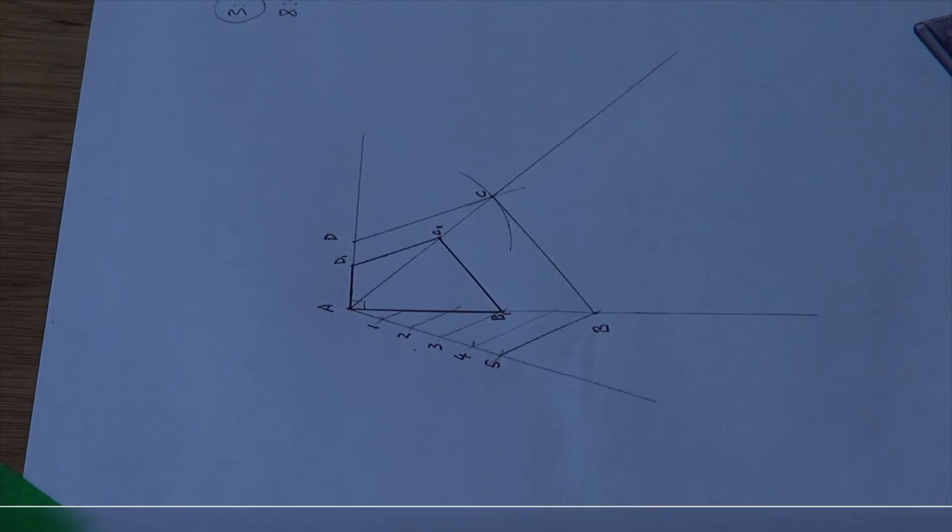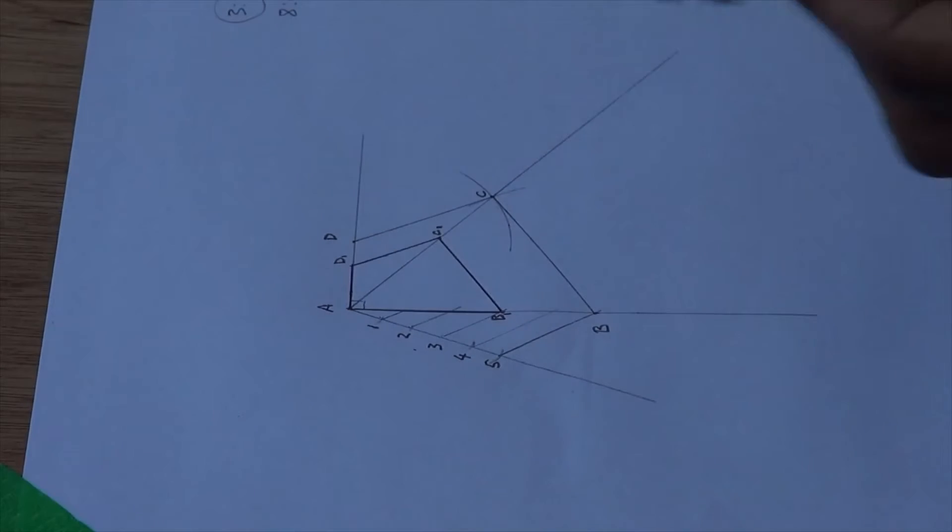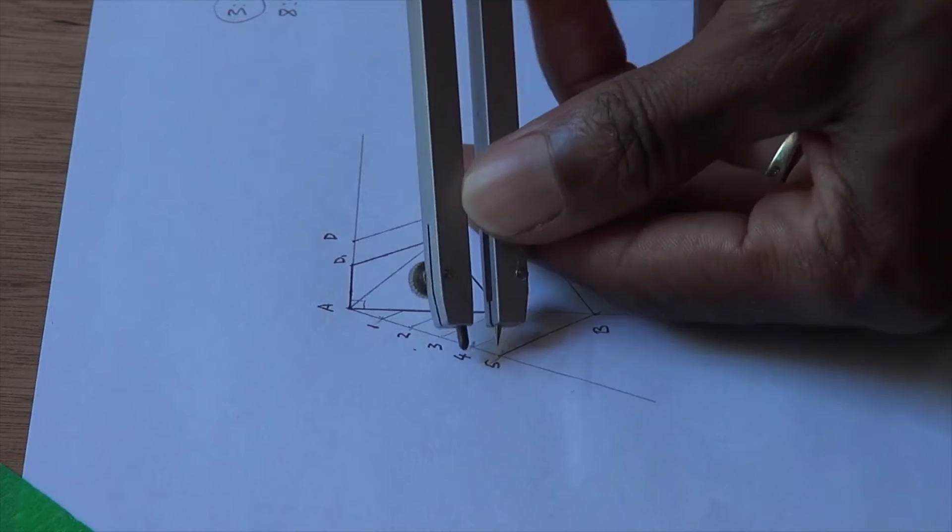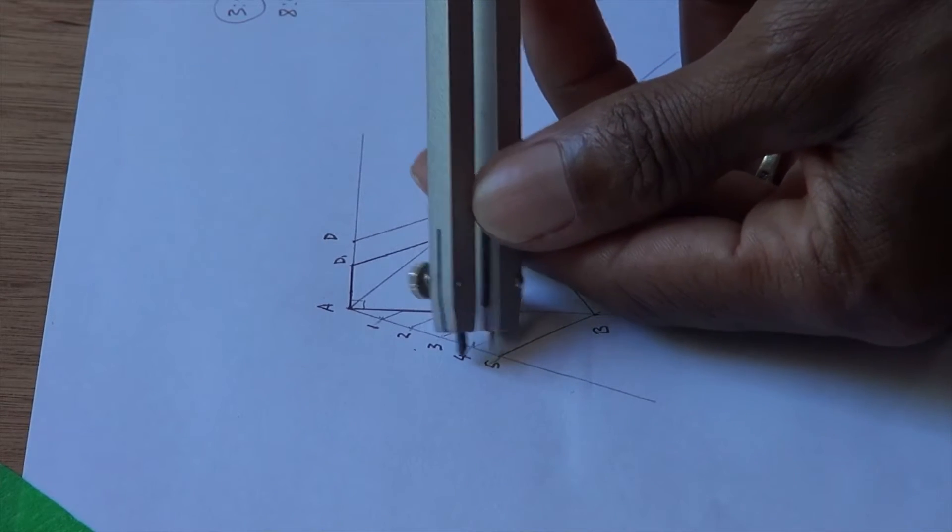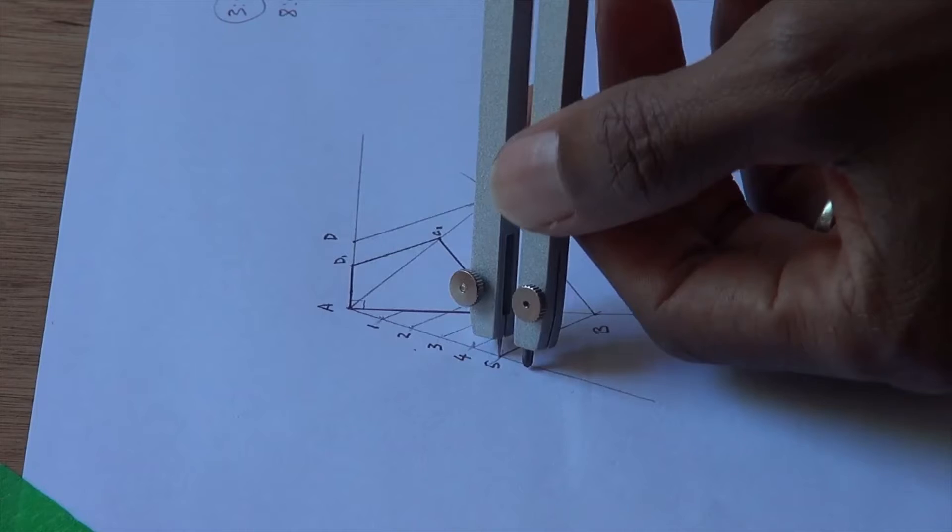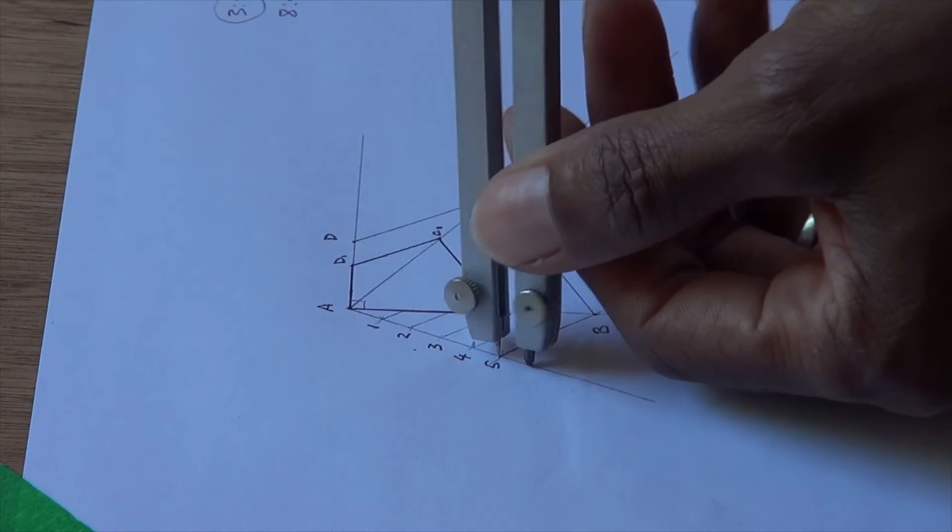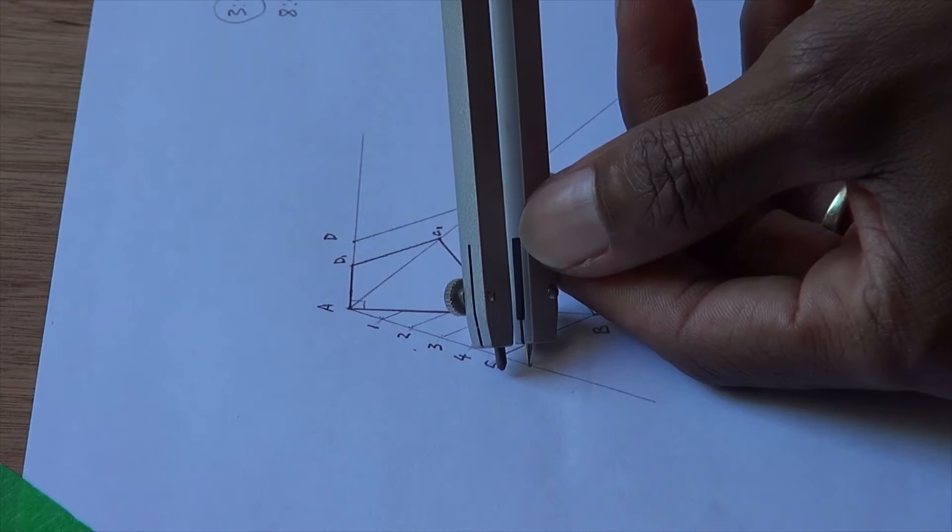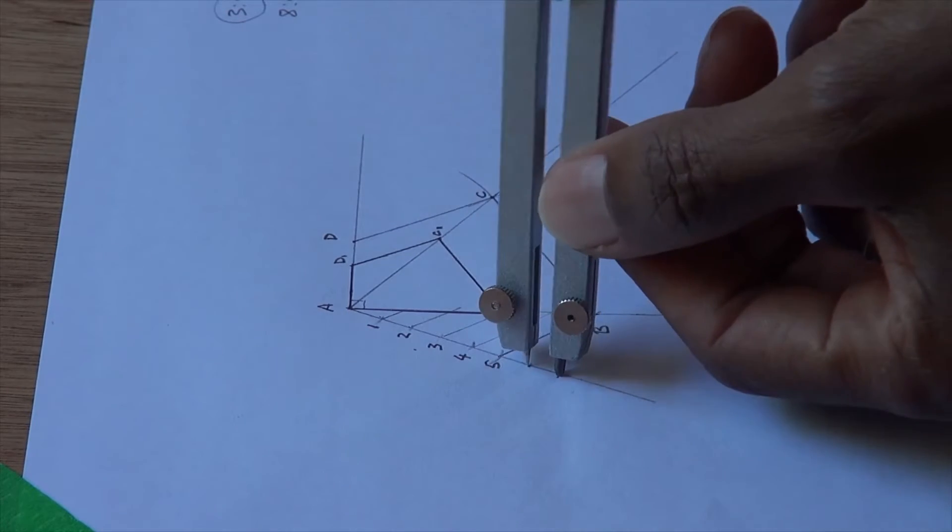Since our ratio is 8 to 5, we're going to continue marking off both sides with equal spacing until we get to 8. We have five equal parts already, so this now is number 6, number 7,